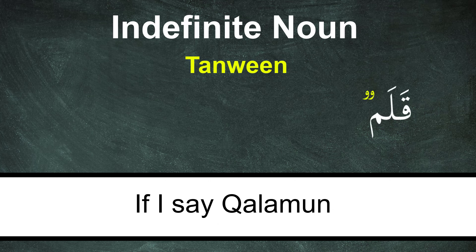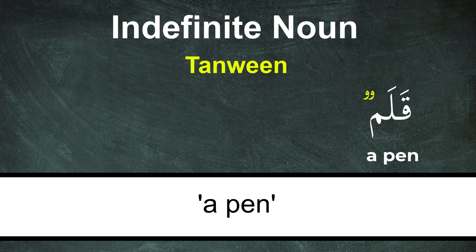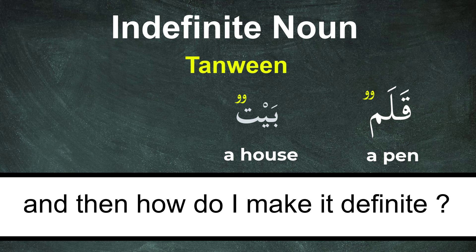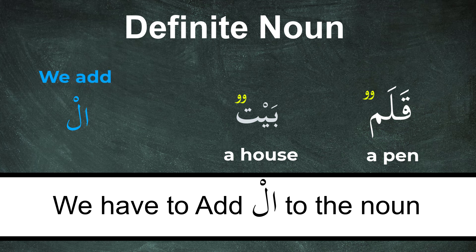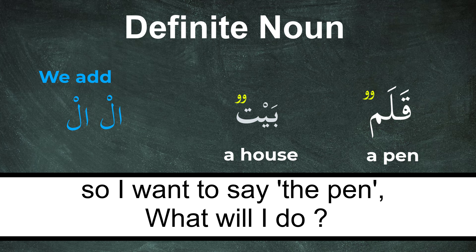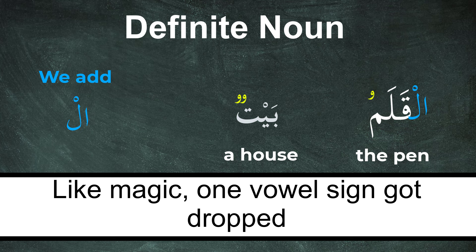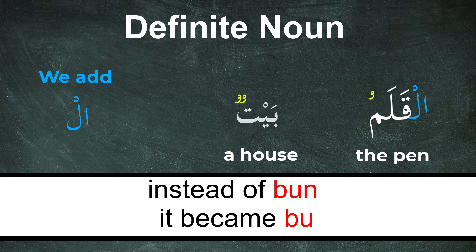If I say 'Kalamun' — a pen. If I say 'Baitun' — a house. How do I make it definite? We have to add 'Al' to the noun. So if I want to say 'the pen', I say 'Al-Kalamun'. As soon as I put 'Al', like magic, one vowel sign gets dropped. Instead of 'Bun', it became 'Bu'. Got the idea?